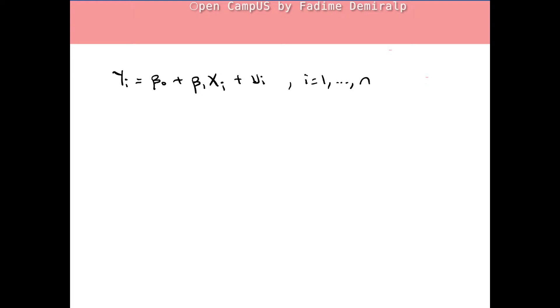In chapter 4 we discussed linear regression with a single regressor, where the intercept coefficient β₀ and the slope coefficient β₁ are unknown. We explained the OLS estimator of the intercept coefficient β₀-hat, the OLS estimator of the slope coefficient β₁-hat, and the OLS predicted value ŷᵢ.